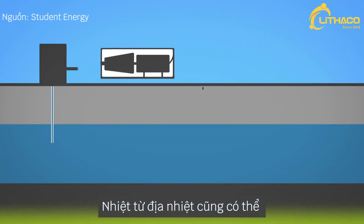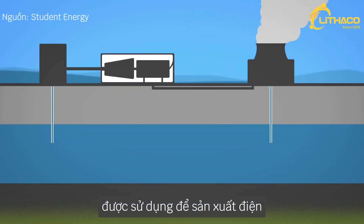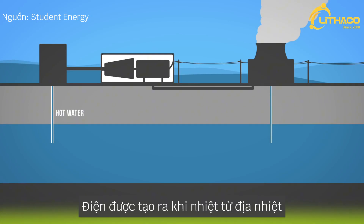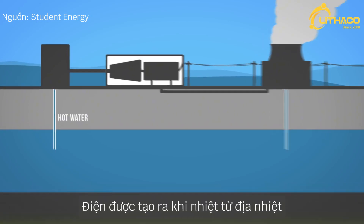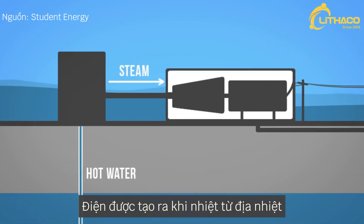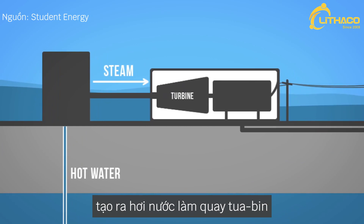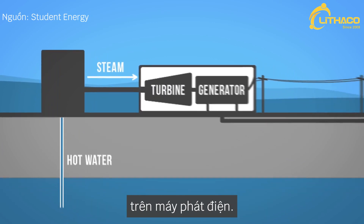Geothermal heat can also be used to produce electricity in a geothermal power plant. Electricity is generated when geothermal heat produces steam that turns turbines on a generator.